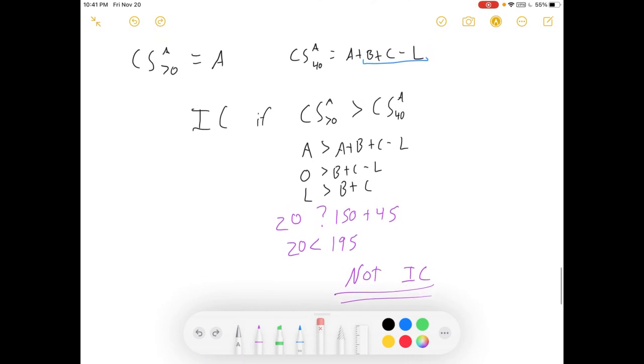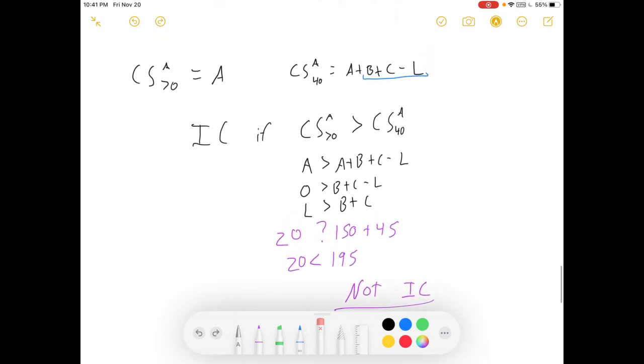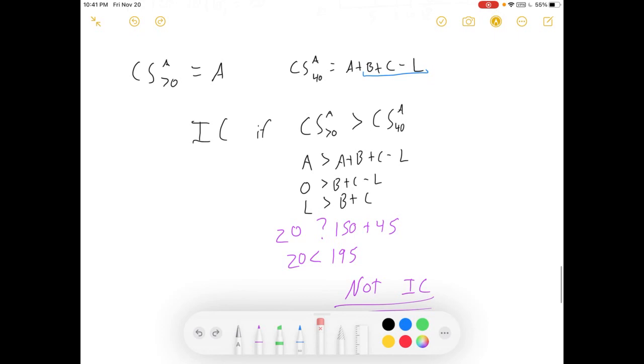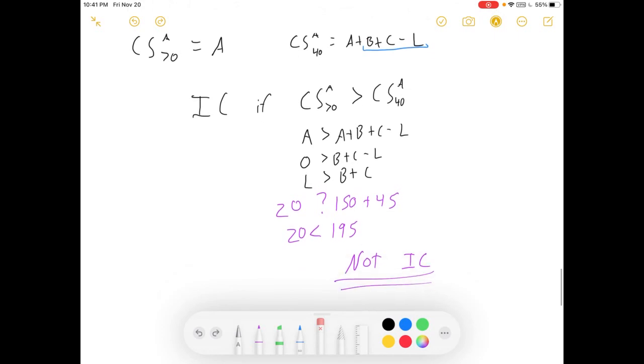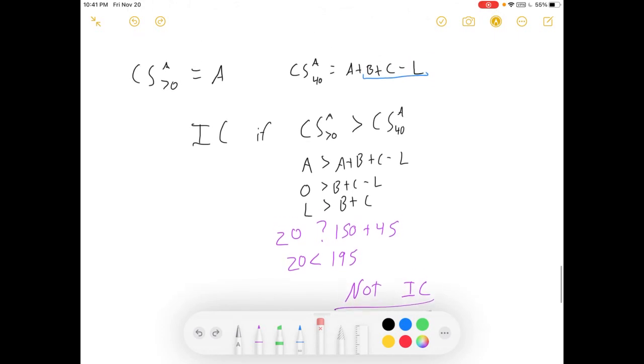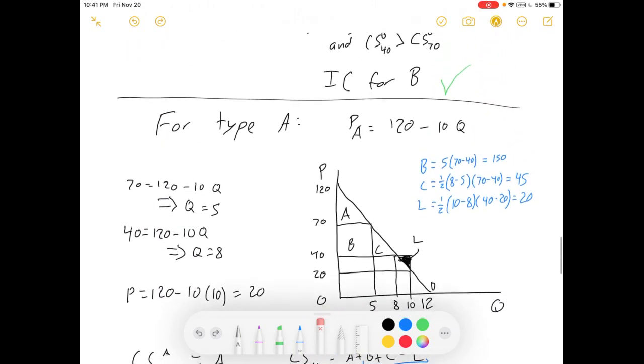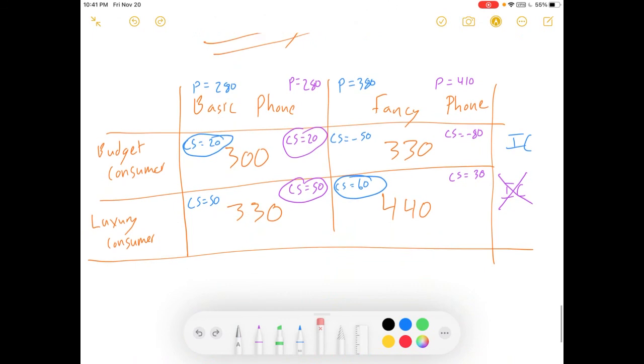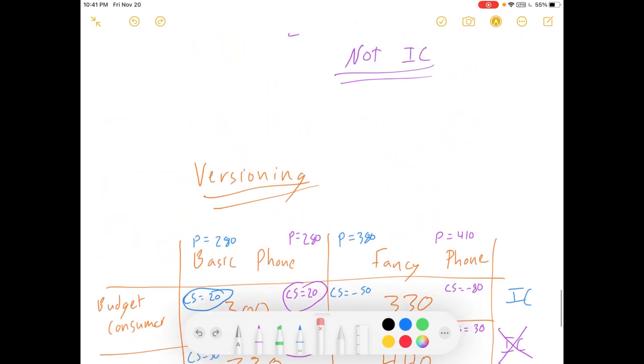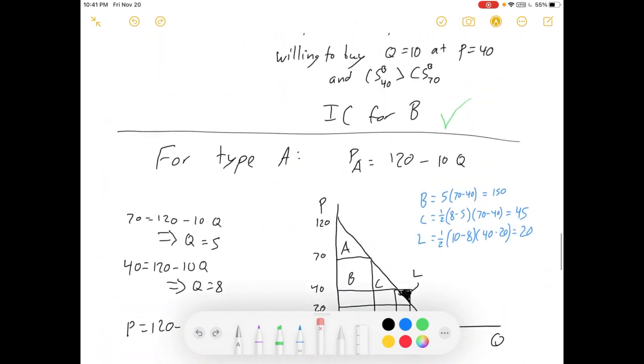But L is 20. And is 20 greater than 150 plus 45? Of course not. 20 is less than 195. This is not incentive compatible, because our high-paying consumer is wanting to buy the discounted good. We set our prices wrong. So, there you have it. I did one example, a complicated one that's not incentive compatible.